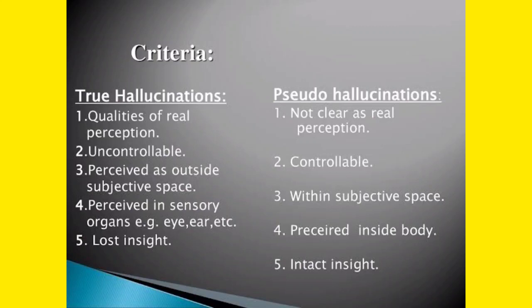True hallucination is perceived through sensory organs. For example, the patient is seeing something through their eyes — that is visual hallucination — or the patient is hearing a voice through their ears. The sensory organs are involved in true hallucination. If the patient is hearing a voice, the ear is involved; if the patient is seeing something, the eyes are involved.